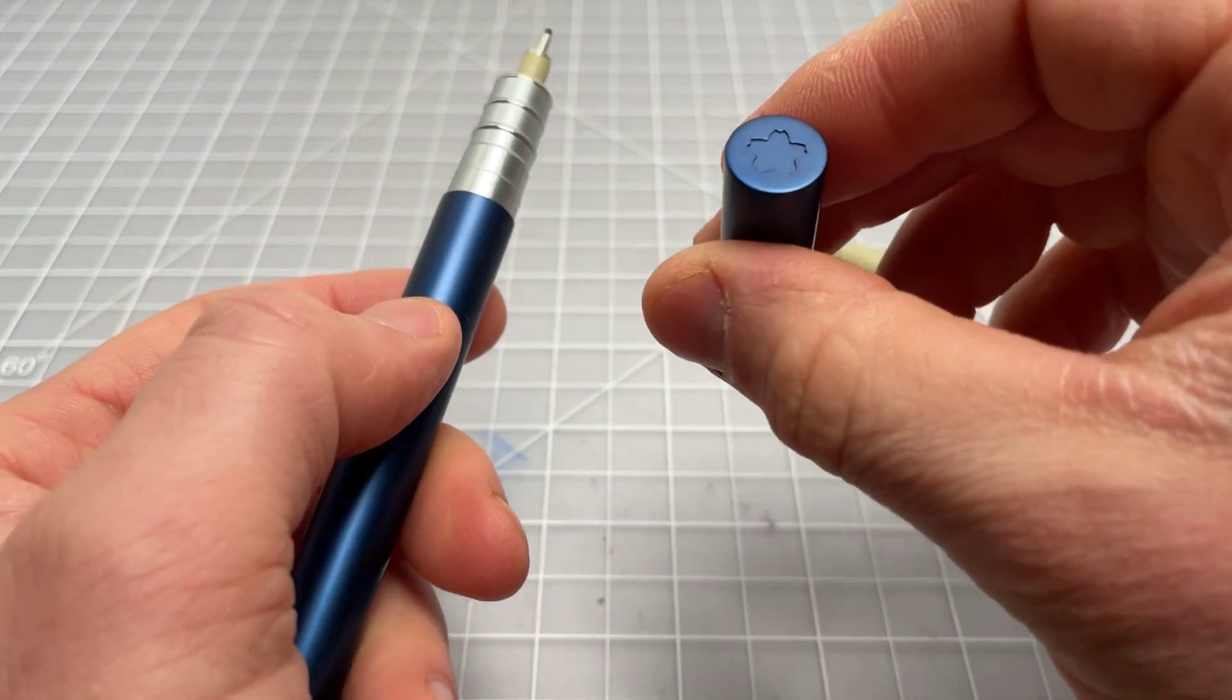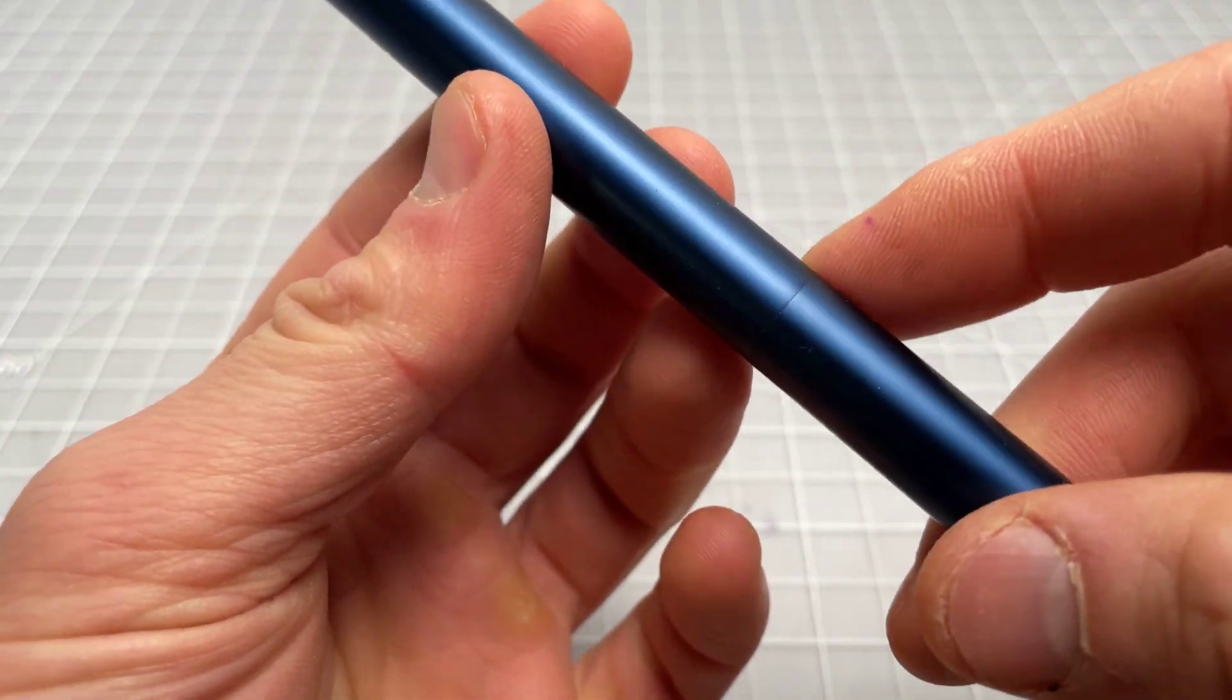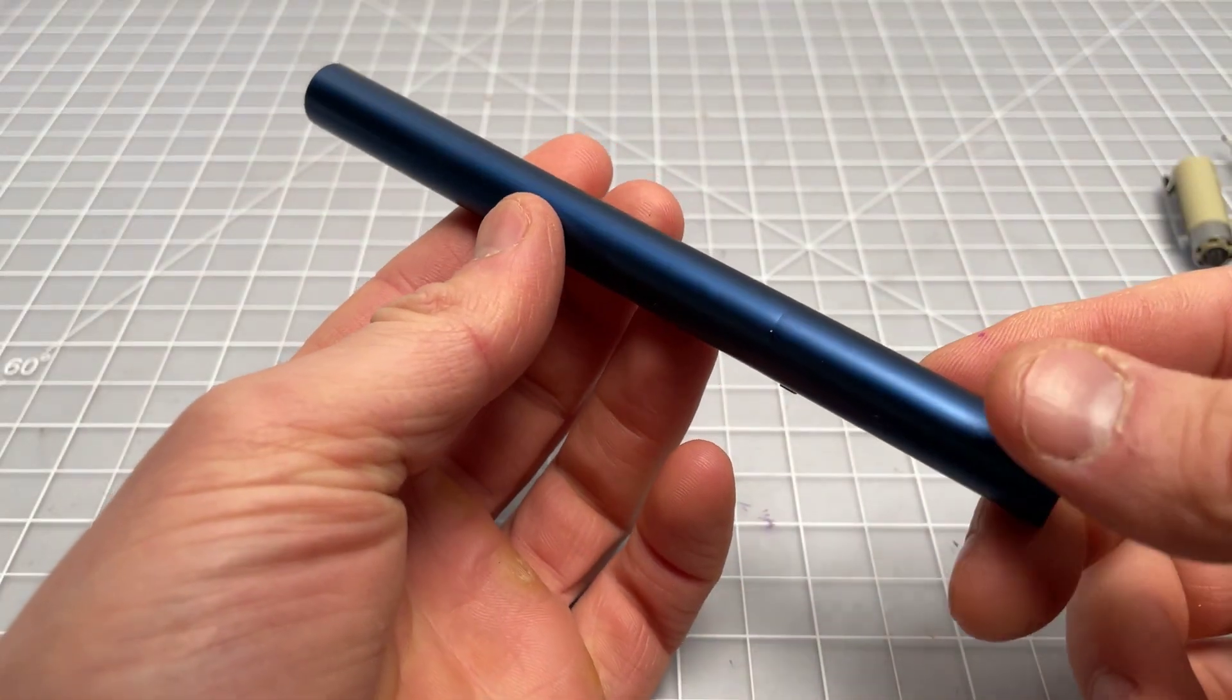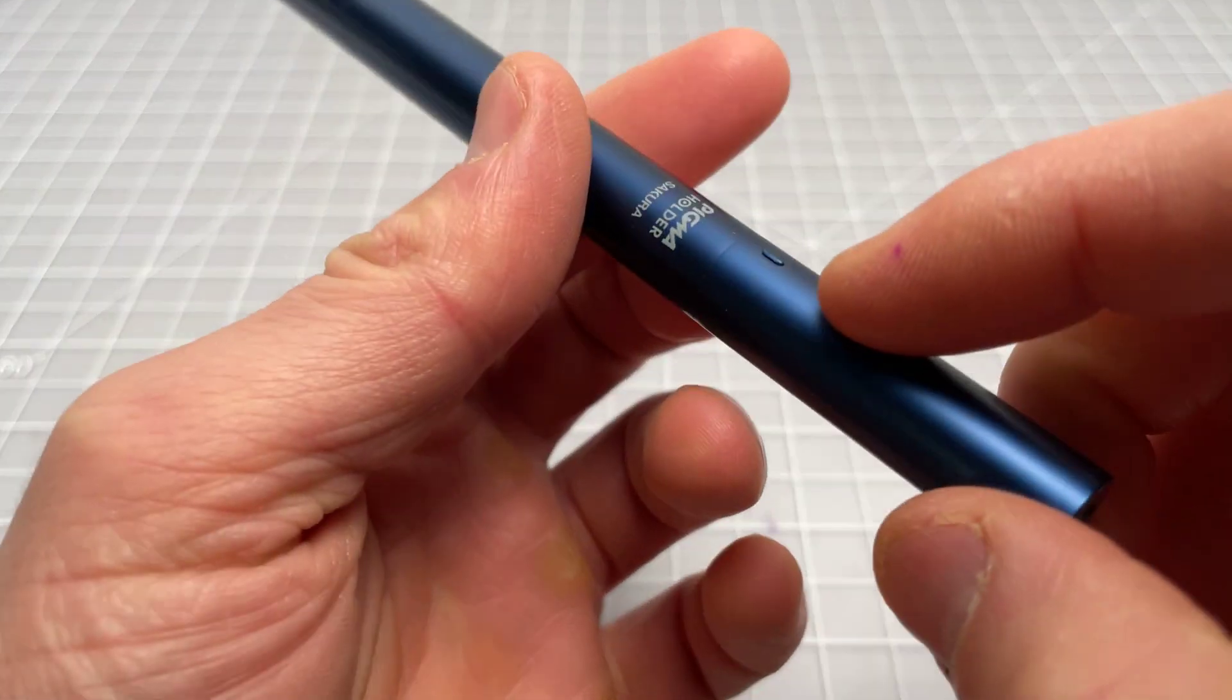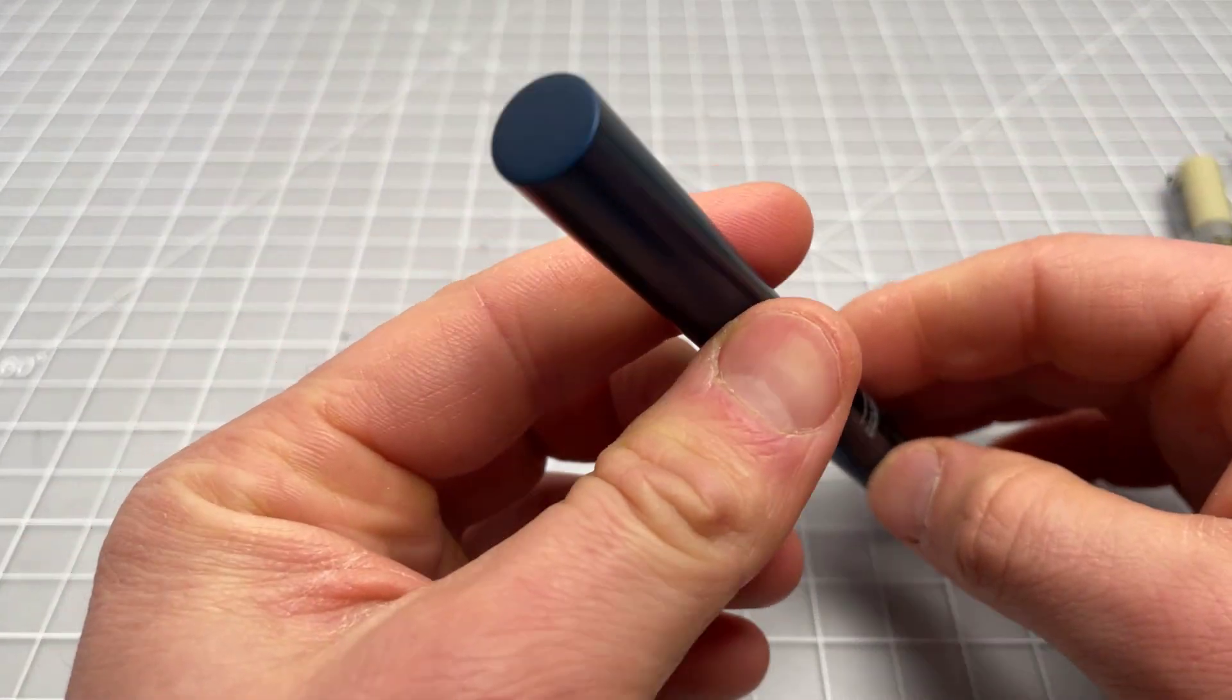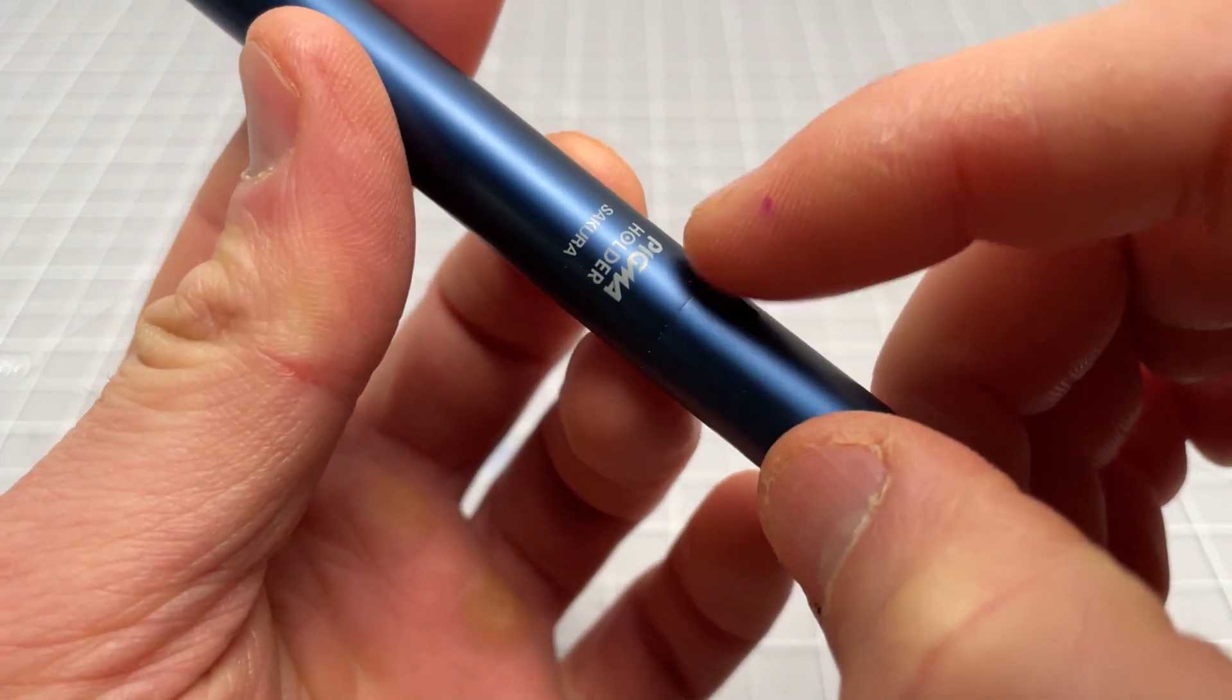Here's the cap. It's very simple. There's a Sakura logo on the top, that sort of flower logo. Clips on. Sorry, snaps on. Really nice fit here. That line almost entirely goes away, which is tough to do on a finish like this. So that's very cool. You'll note there is no clip. There's a tiny little roll stop here. This thing spins, so it doesn't matter how you put it on.